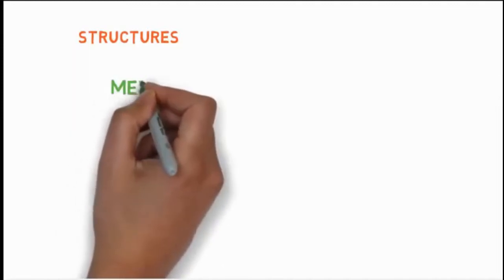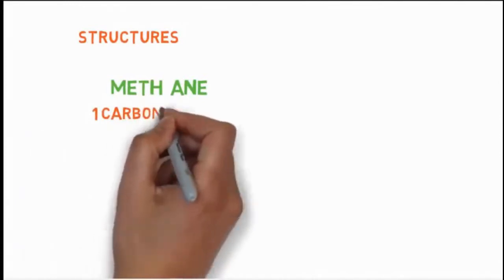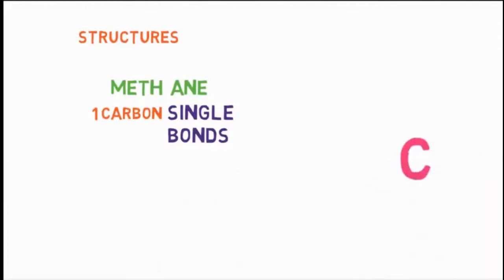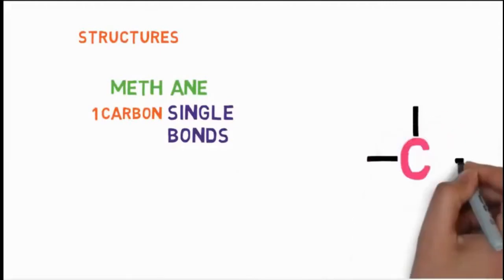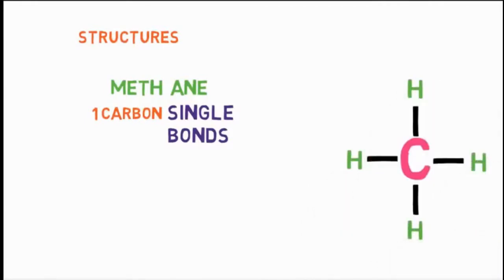Now let's draw the structures. For drawing the structures, you need to recall an important feature of carbon — tetravalency, that is the ability of carbon to form 4 covalent bonds. Methane: it has prefix 'meth' meaning one carbon, and 'ane' means carbon-carbon single bond. Add 4 bonds to the carbon, then add hydrogen to each bond. This is our methane ready.